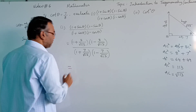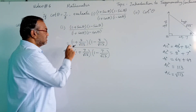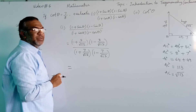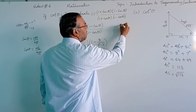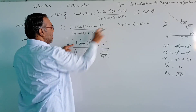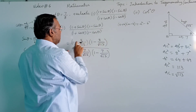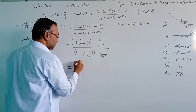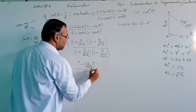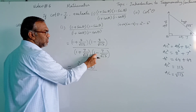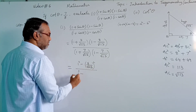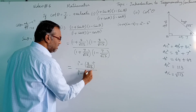If you observe carefully, we have here one identity: (a plus b) into (a minus b) equals a squared minus b squared. We have 1 in place of a and 8 divided by root 113 in place of b for the numerator, and 1 in place of a and 7 divided by root 113 in place of b for the denominator. So applying the identity, each factor becomes a squared minus b squared.